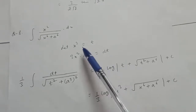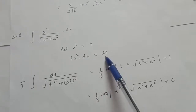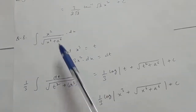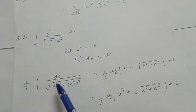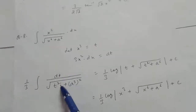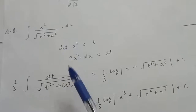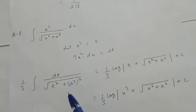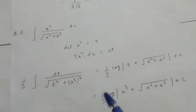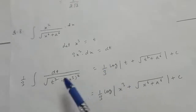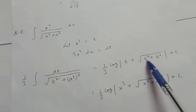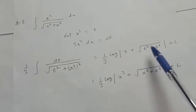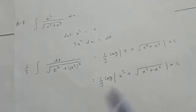Differentiating both sides gives 3x² dx equal to dt, and since x² exists in the integral, x² dx becomes dt/3. The integral becomes (1/3) times integral of 1 upon root (t² + a⁶), applying the formula log |t + √(t² + a⁶)| plus c, then substituting t back as x³.